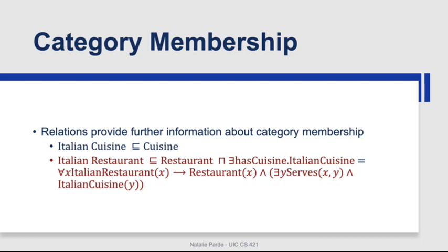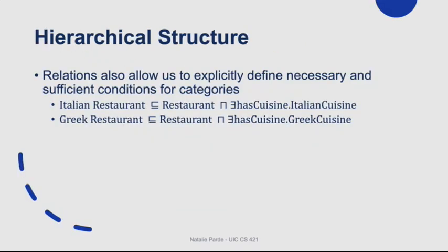Category membership can further be defined by relations between the concepts being defined and other concepts in the domain. For example, in the equivalence shown in red, the description logic statement on the left-hand side conveys all of the information provided by the much more complex first-order logic statement on the right-hand side. This is, in fact, the other way that we can specify hierarchical structure in description logics. Relations allow us to explicitly define the necessary and sufficient conditions for membership in each category.